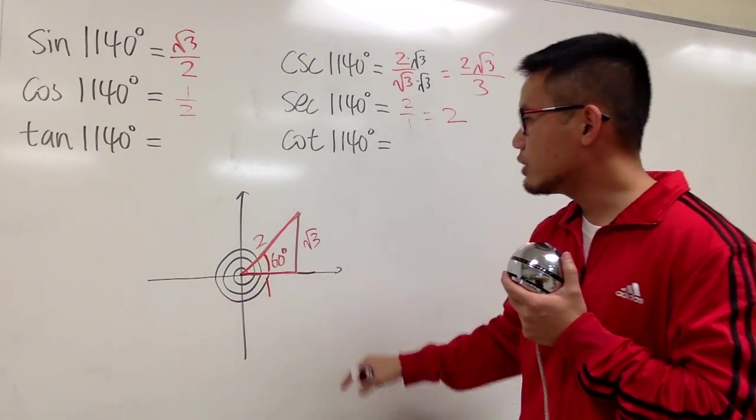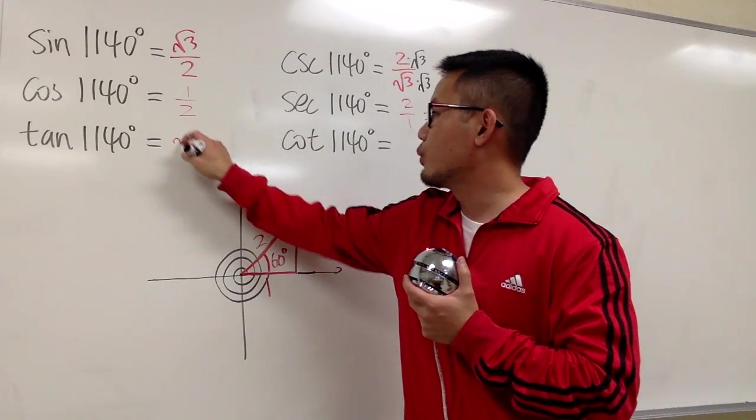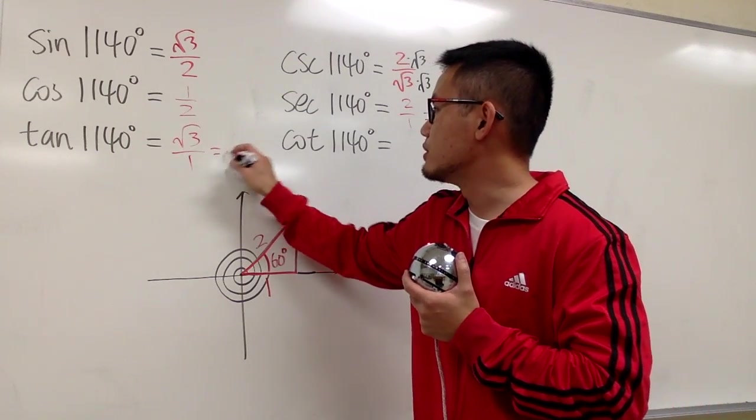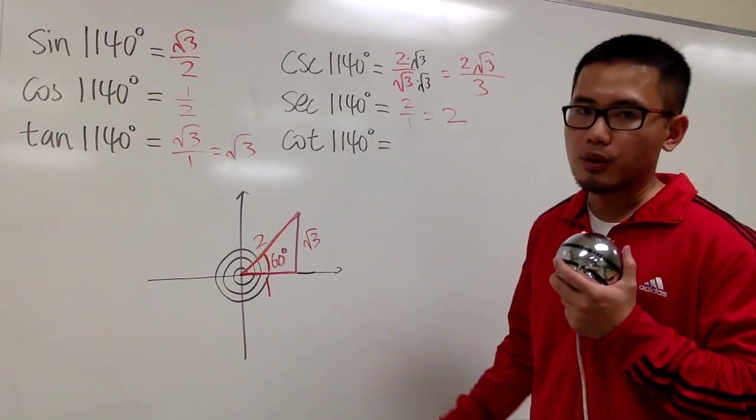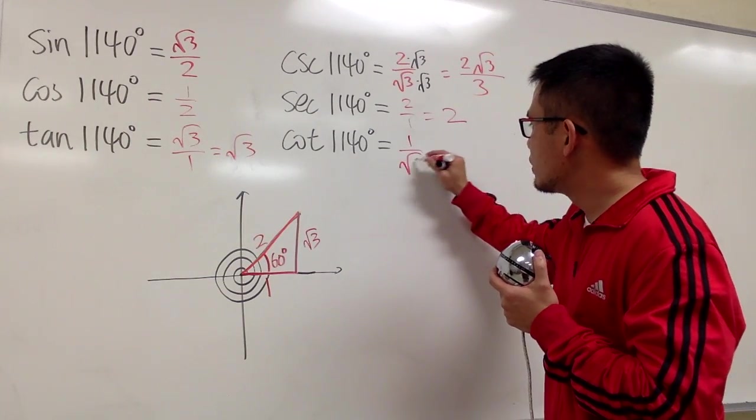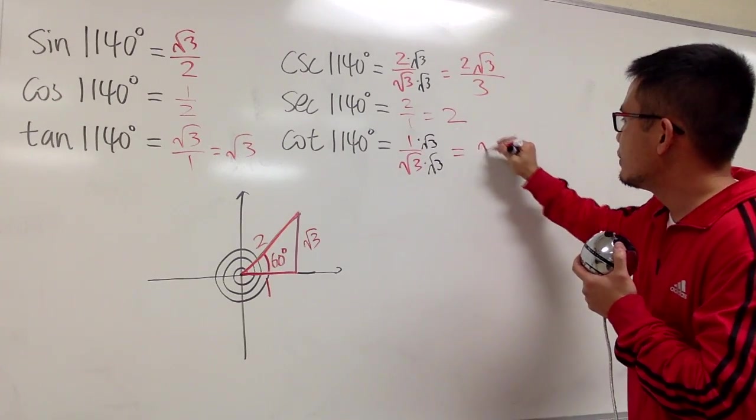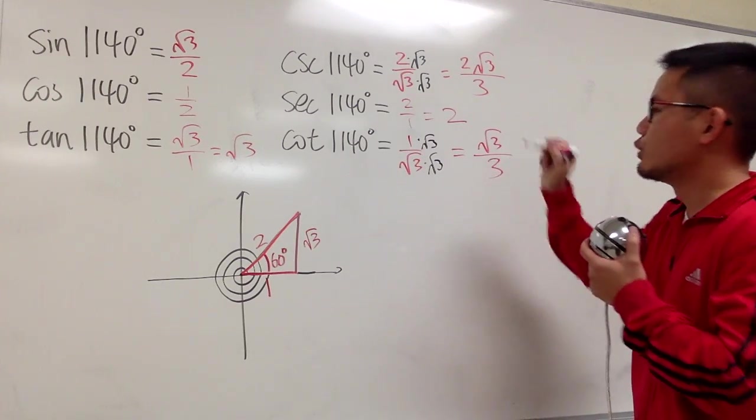Lastly, for the tangent and cotangent, tangent is going to be y over x, which is square root of 3 over 1, which is just square root of 3. And for cotangent, it will be this over that, 1 over square root of 3. And you do this, right? Rationalize the denominator. And then you get square root of 3 on the top over 3.